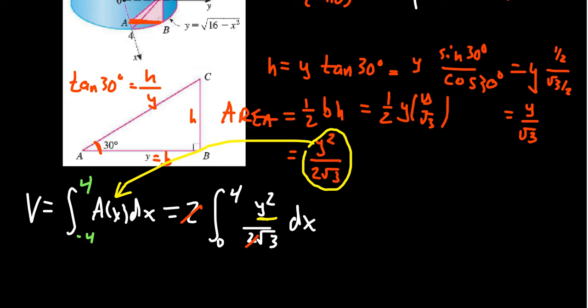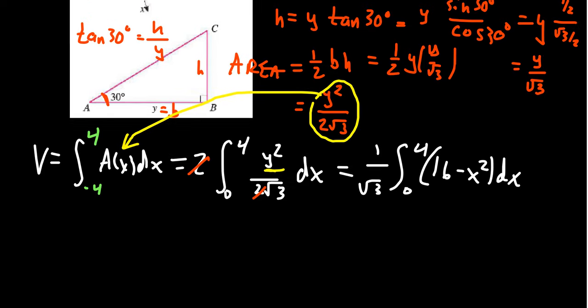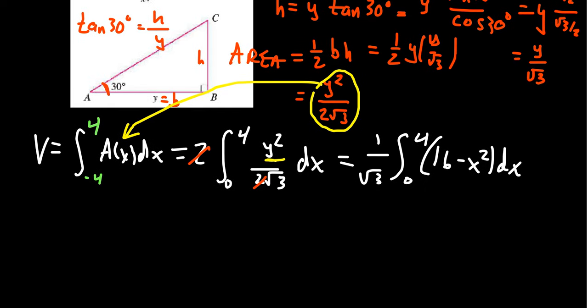we end up with the integral with 1 over the square root of 3 times the integral from 0 to 4. We get 16 minus X squared dx. And so integrate that thing. The antiderivative will look like, well, we get the constant 1 over square root of 3 in front. We're going to get 16X minus X cubed over 3 as we go from 0 to 4.